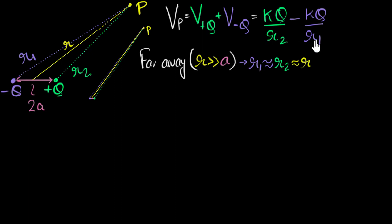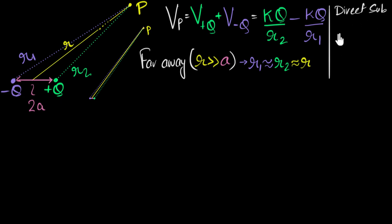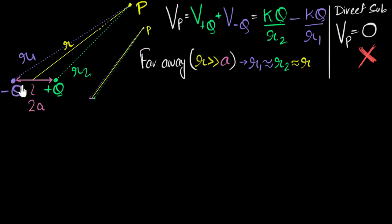If I substitute r1 = r2 = r, the denominators become the same, numerators cancel, and I get VP = 0 — and that is wrong. Although they are approximately equal, from the diagram I can see that r1 is slightly bigger than r2, meaning +q is slightly closer to P than −q, so the potential must be slightly positive — some small non-zero value.